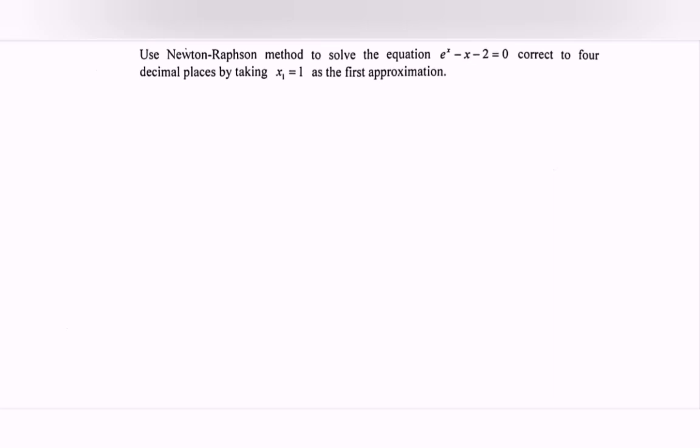Use the Newton-Raphson method to solve the equation f(x) = e^x - x - 2, correct to four decimal places, by taking x₁ = 1 as the first approximation.